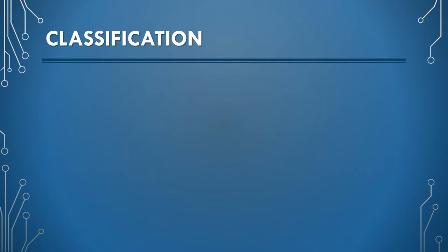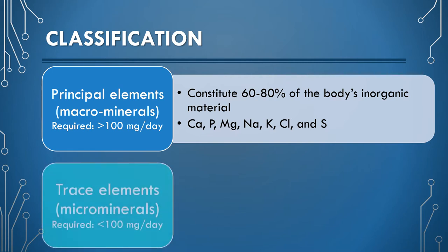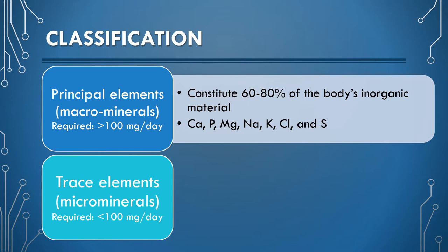These minerals are classified as principal elements and trace elements. There are seven principal elements, also called macro minerals, and they constitute near about 60 to 80 percent of the body's inorganic material. The principal elements are required in amounts greater than 100 milligrams per day. The micro minerals are required in amounts less than 100 milligrams per day.